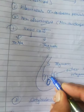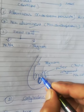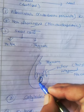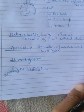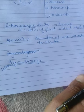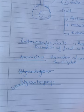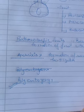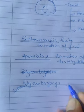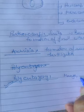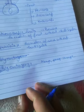In polyembryony, the cells of the nucellus surrounding the embryo sac convert into embryos and form more than one embryo inside the seed. Examples of polyembryony include mango, orange, and citrus plants. These are common examples that may appear in examinations.